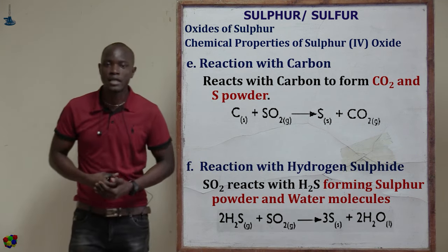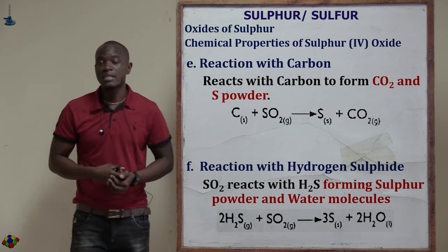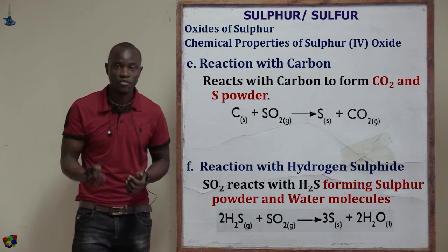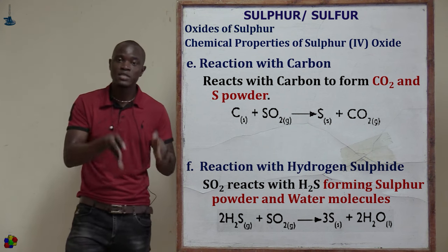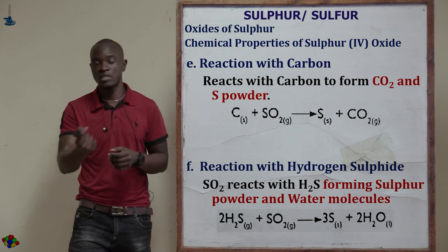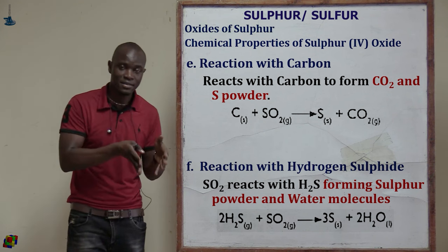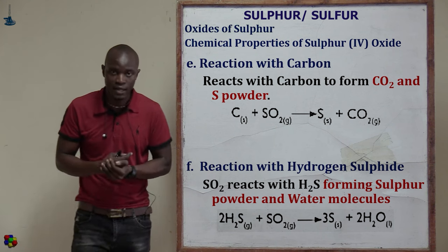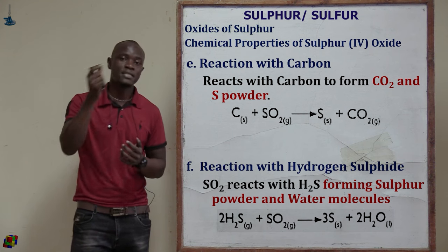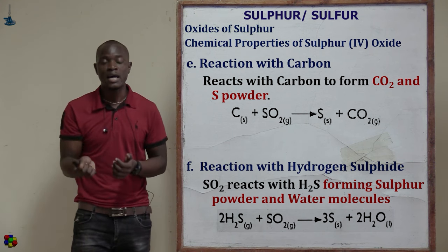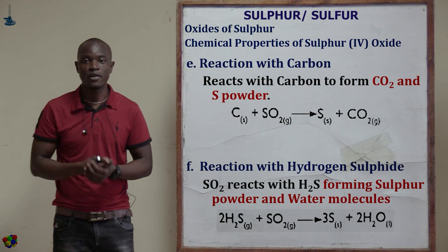The next oxidizing property is reaction with carbon. Carbon is a strong reducing agent, so it extracts the oxygen from sulfur(IV) oxide, forming carbon(IV) oxide (CO2), while sulfur is reduced from a gas to a yellow sulfur powder. Sulfur(IV) oxide oxidizes carbon to carbon(IV) oxide and is itself reduced from sulfur(IV) oxide to sulfur powder.